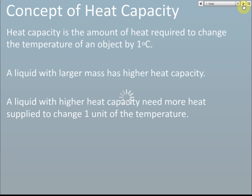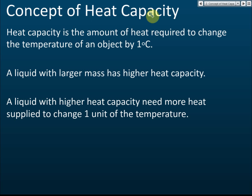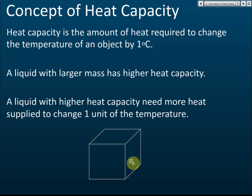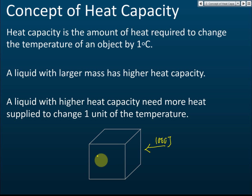What is heat capacity? Let's say we have an object — a block. If we heat this block, the temperature of the block will change. Let's say we give it 1000 joules, and we find that the temperature of the block increased from 27 degrees Celsius to 29 degrees Celsius — a temperature change of 2 degrees Celsius.